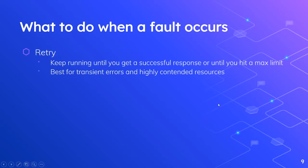So what can we do about it? Well, first, you could just retry. You have a server running the service, you get a fault, you say maybe it was a fluke — let's run it again and see what happens. You don't want to do this indefinitely as that's going to create a bottleneck, so you want a max limit, preferably lower rather than higher, since we have other strategies that are more robust. This is best for transient errors or for highly contended resources — you tried to do something, someone else is using it, so let me try again in a little bit.